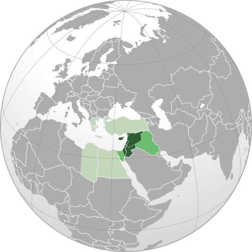There are also Jews, Christians, Yazidi Kurds, Druze, and other smaller sects. Until the establishment of the modern state of Israel in 1948, Jews lived throughout the Levant alongside Muslims and Christians; since then, almost all have been expelled from their homes and sought refuge in Israel.